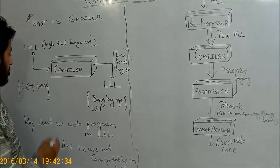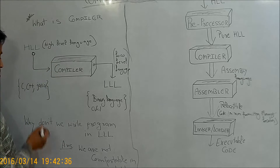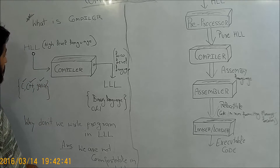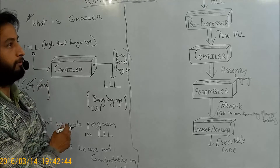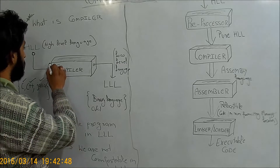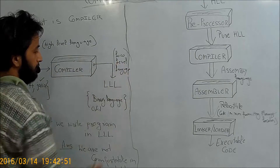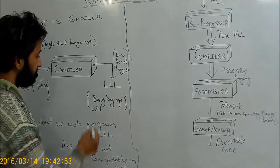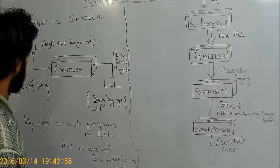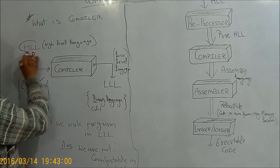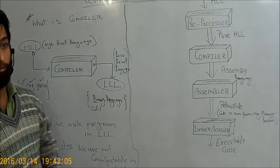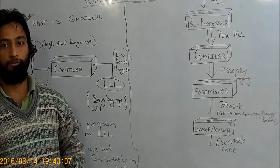What is high-level language? Any program or code that we write in C, C++, or Java is a high-level language. The compiler will take that code written in C, C++, or Java and convert it into low-level language. The low-level language is binary language, in the form of 0s and 1s. So generally we are converting our high-level language to low-level language.